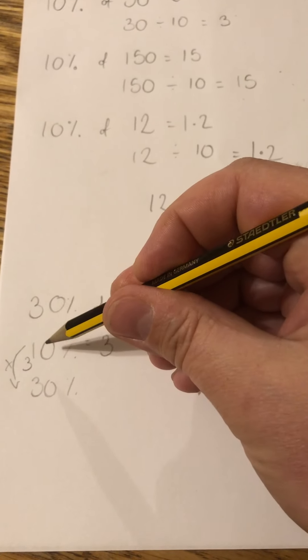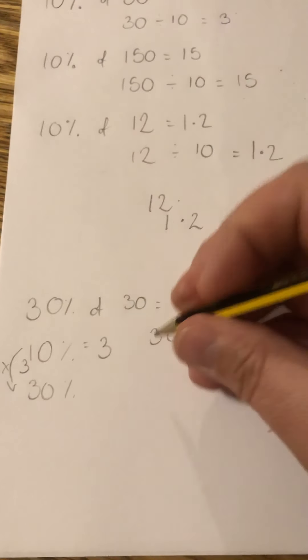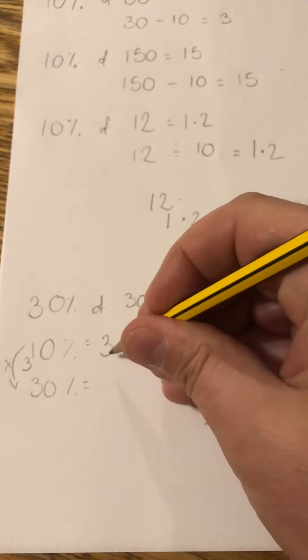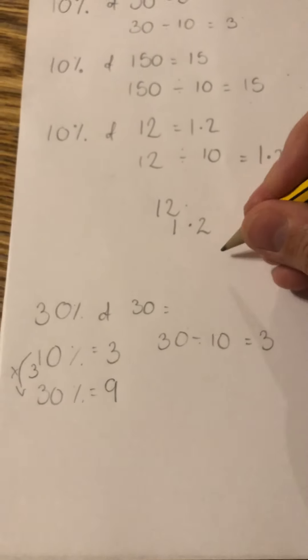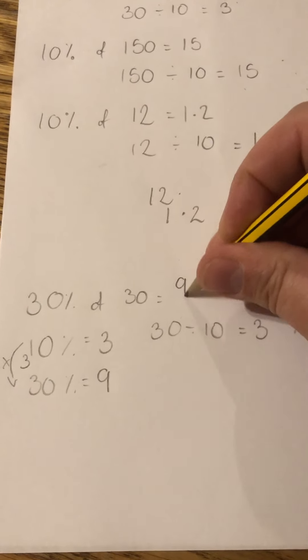And if I want 30%, I want 3 times this amount. 10 times 3 is 30, so I want 3 times this amount. 3 times 3 is 9. So 30% of 30 would be 9.